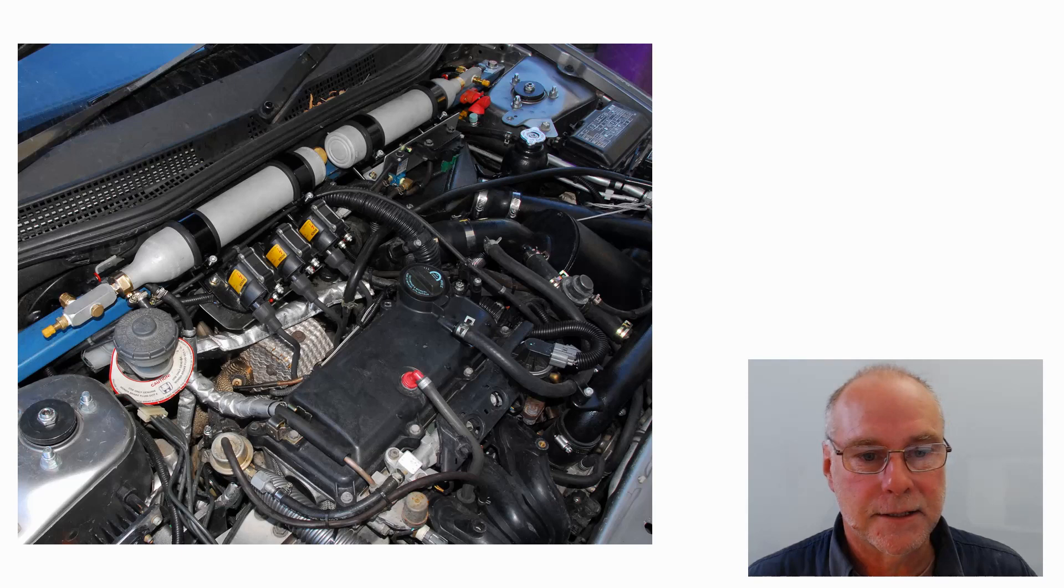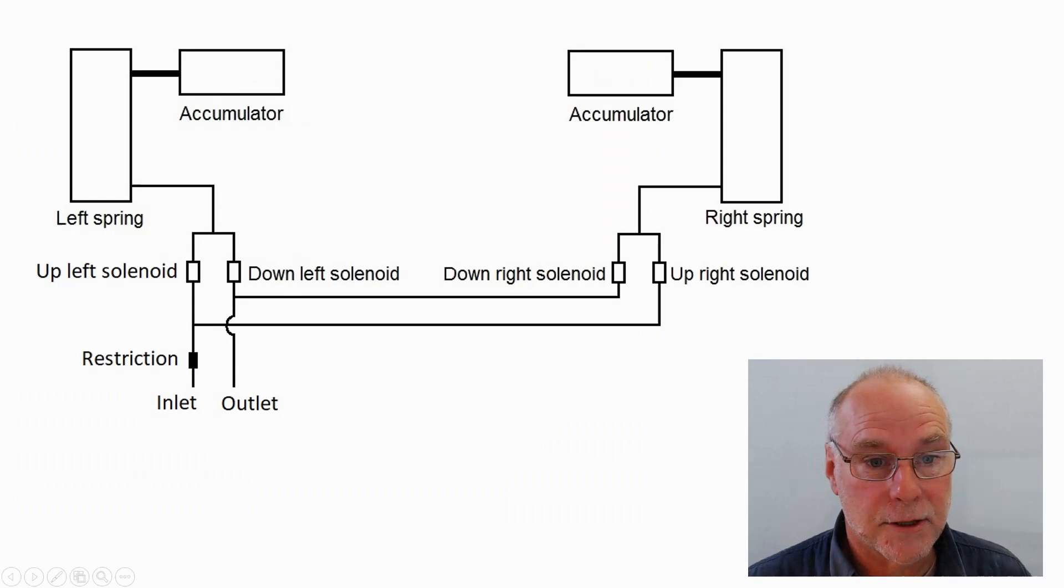Here's a diagram showing the front and those reservoirs we just saw under the bonnet. They're called accumulators in this diagram. So you can see how there's an accumulator connected to each of the springs. And you can see also we have up and down solenoids for each spring. So the two rear springs are controlled as a pair; the two front springs are controlled individually.